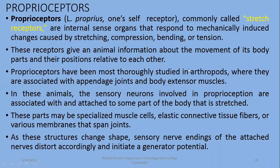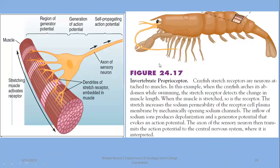Next we are going to discuss another type of receptor: proprioceptors. Proprioceptors — from 'proprius' meaning one's self — are also known as stretch receptors, which are responsible for the detection of stretching, compression, bending, or tension. These receptors give the animal information about the movement of its body parts as well as their position in relation to their environment. They are associated with appendages, joints, and some body extensor muscles.